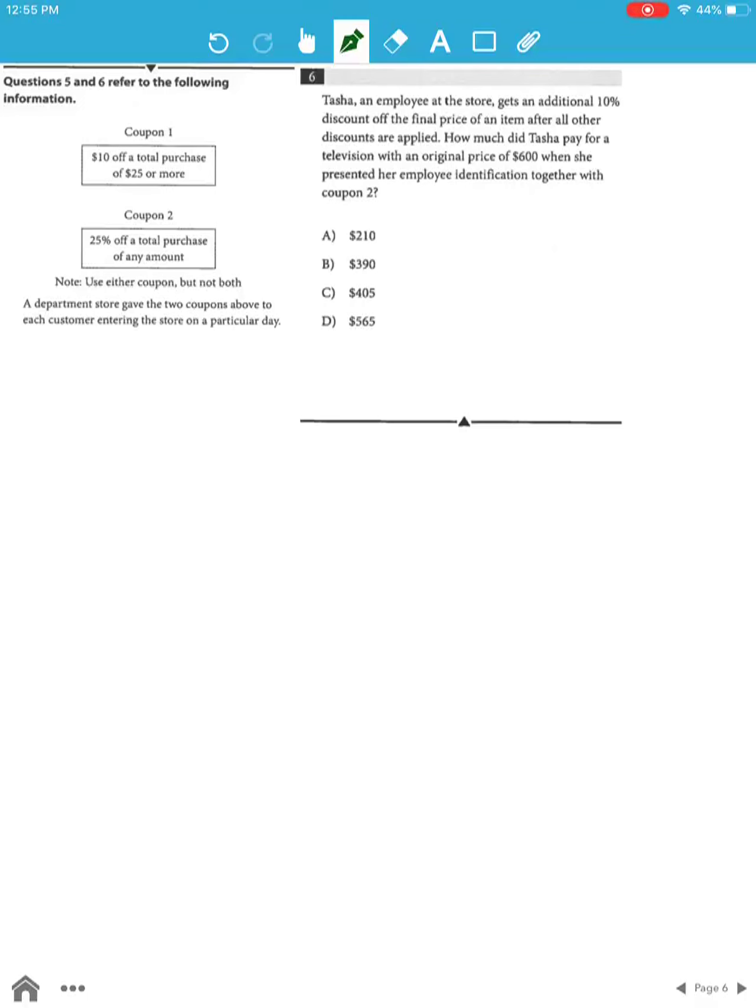The total amount that Tasha had to originally pay was $600. Now, she's used coupon 2 which is 25% of the total purchase price. That means the discount she's going to receive will be 25% of $600, which is $150.